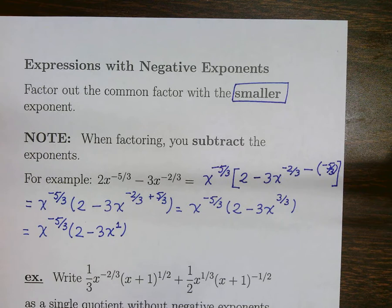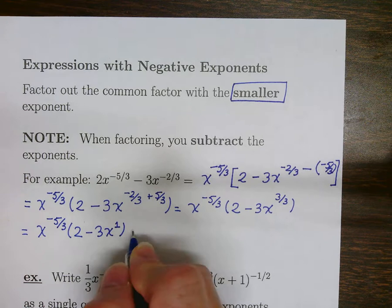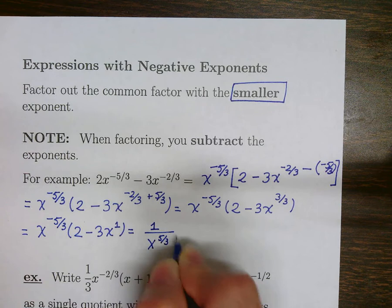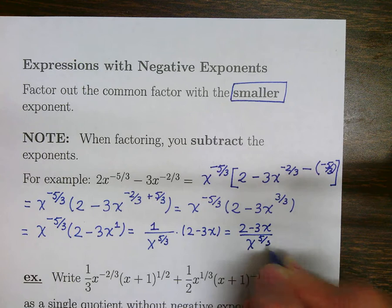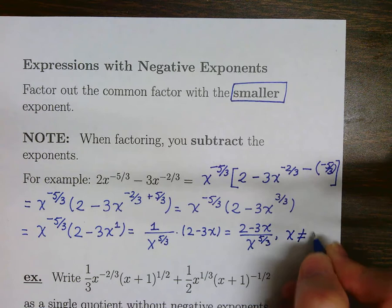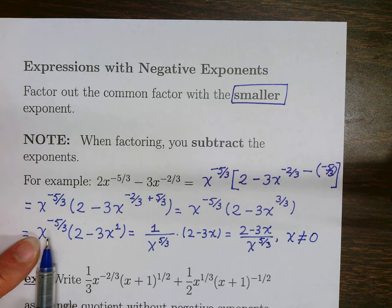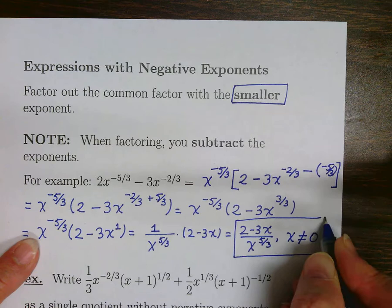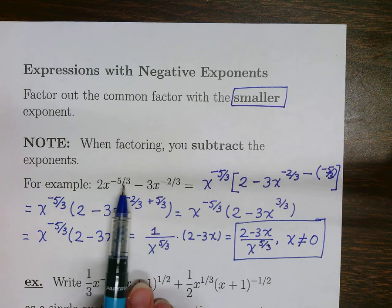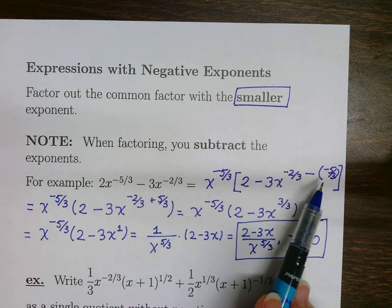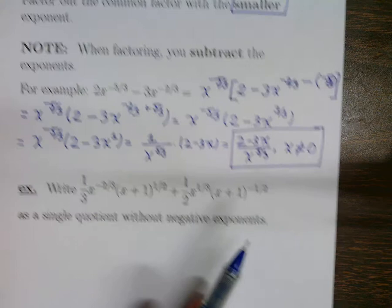That's technically done, but we would like to not have negative exponents in our answer. So let's rewrite that as 1 over x to the 5 thirds times (2 minus 3x), which is just (2 minus 3x) over x to the 5 thirds. Notice that we have an excluded value — x can't be 0. Without the negative exponent being removed, you might not catch that 0 is an excluded value. So we like to write our expressions without negative exponents. We looked for the smallest power to factor out, which in the negative case is negative 5 thirds, and then we subtracted, just like we did with positive exponents.